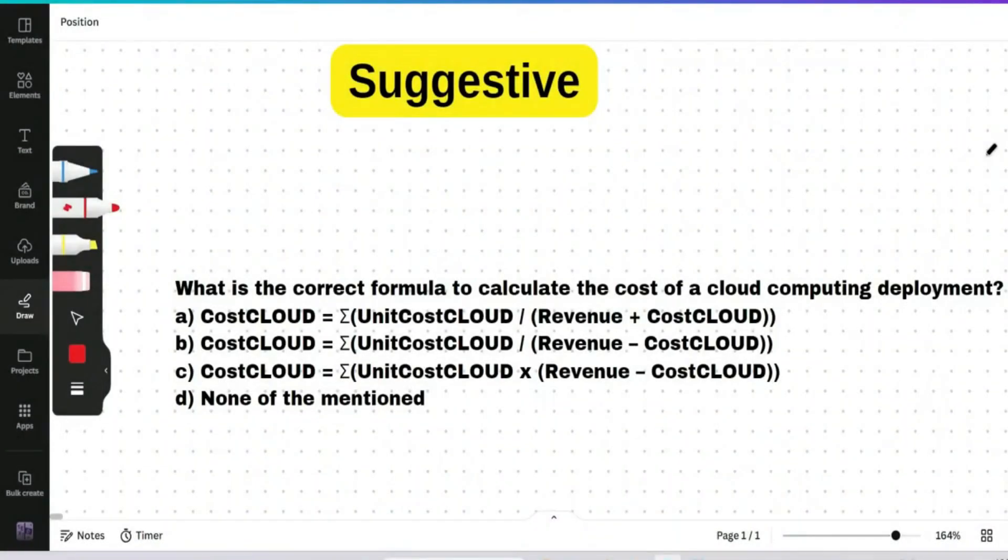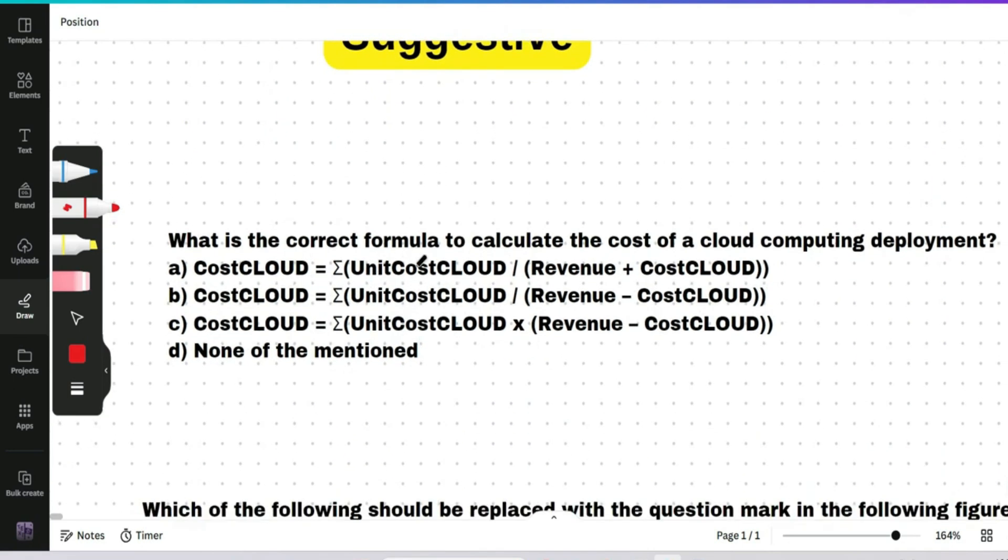Okay, so let's start. Question is: what is the correct formula to calculate the cost of a cloud computing deployment? Please pause the video and try to give me the answer because this question was asked on last off-campus drive. Okay, let me answer that. Cost cloud equals unit summation of unit cost cloud by revenue minus cost cloud. Actually, unit cost is defined as the cost of a machine instance per hour or another resource.